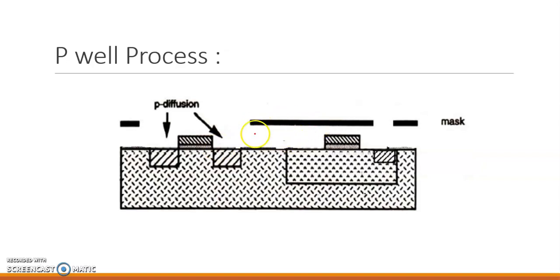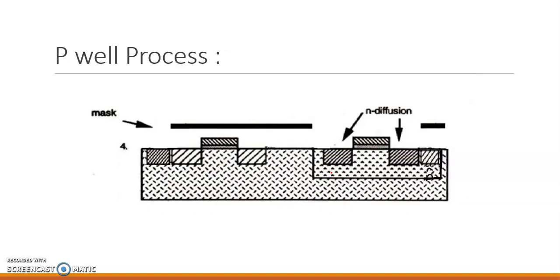Next, with the help of the next mask, we have the N-substrate and this is the P-well. Here, we are going for P-diffusion — this is P-diffusion for the PMOS drain and source regions. Also, somewhere we are doing a P-type channel stop implant, which is used for isolation. With the help of this diffusion, the drain and source region of the PMOS has been formed. Now what is left is the drain and source of the N-channel. So in our next step, we diffuse the N-type material, and the N-diffusions for the NMOS are formed.